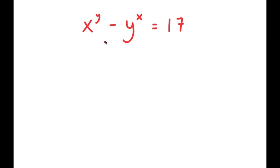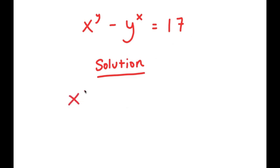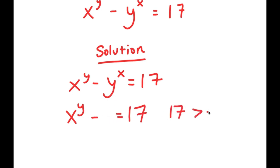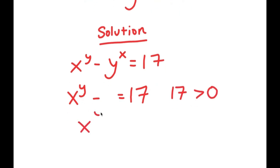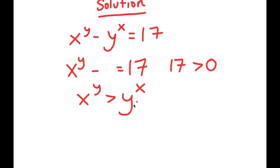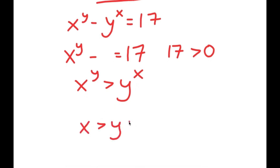In this problem, I have x to the power of y minus y to the power of x is equal to 17. To solve this problem, let me rewrite the equation right here. Just by looking at this equation, what can we infer? Notice how we have x to the power of y minus something is equal to 17, and 17 is greater than 0. Meaning x to the power of y is greater than y to the power of x. And this also must mean that x is greater than y, and y is greater than 0.